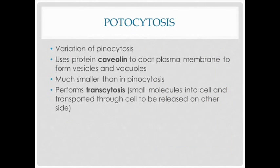In potocytosis — a variation of pinocytosis — it's going to use the protein caveolin to coat the plasma membrane, much like clathrin, and it forms vesicles and vacuoles that are a lot smaller. It performs transcytosis, so it's going to take molecules into the cell and move them all the way across the cell to be released on the other side.